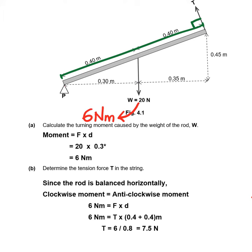In part A, they ask you to calculate the turning moment caused by the weight of the rod, and you have determined it to be 6 Nm. This is a clockwise turning moment, so the weight causes the rod to turn clockwise.